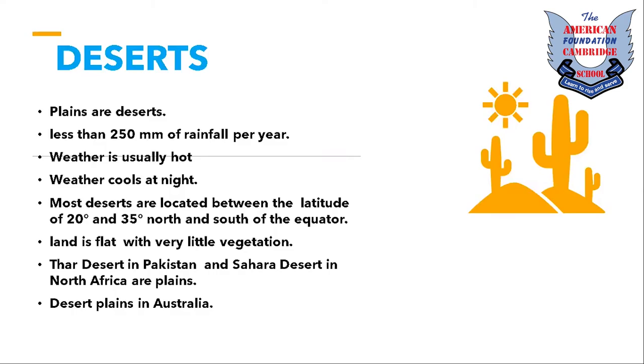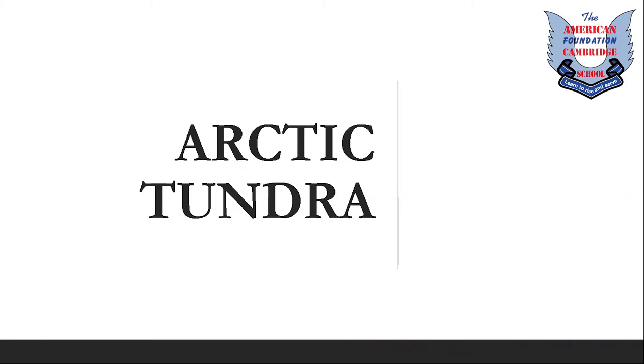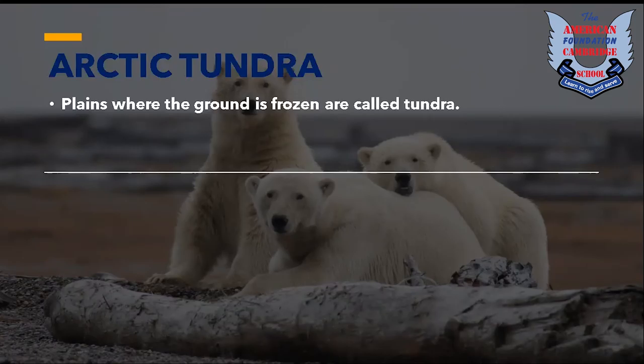Arctic Tundra: plains where the ground is frozen are called Arctic Tundra. The frozen ground is called permafrost. Permafrost can be up to 450 meters thick in the coldest tundra plains. In the warmer tundra plains, the surface thaws in summer because temperatures rise extremely in summer.